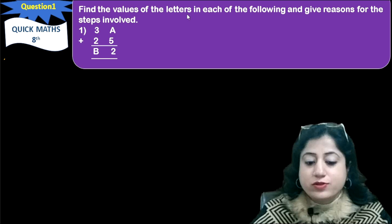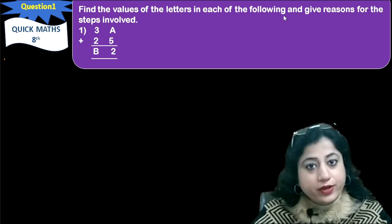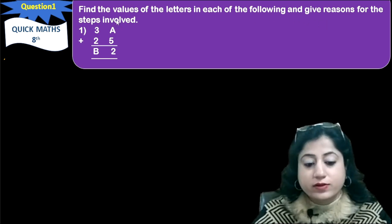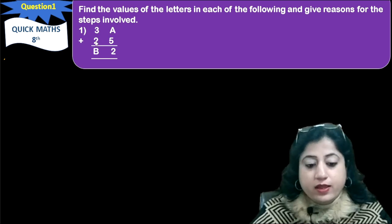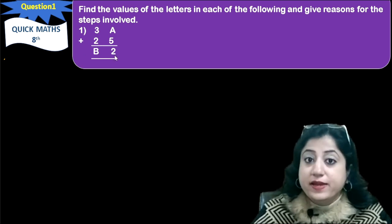Find the values of the letters in each of the following and give reasons for the steps involved. 3A, 2, 5 added. It's a question of addition and the sum is B2.